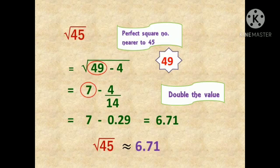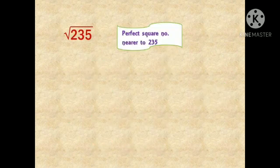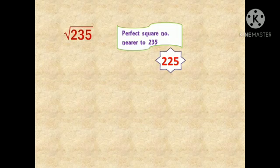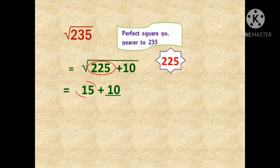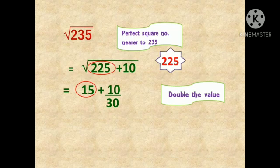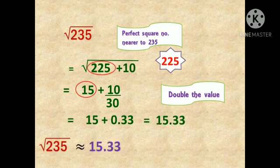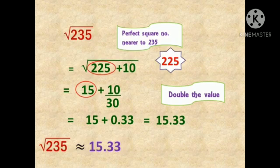Let us solve another problem to get a clearer idea. We will find the square root of 235. The first step: the perfect square number nearest to 235 is 225, because 15 squared equals 225. Rewrite the square root of 235 as the square root of 225 plus 10. The square root of 225 is 15, so we write 15 plus 10 divided by double of 15, which is 30. That gives 15 plus 10/30 = 15 plus 1/3 = 15 plus 0.33 = 15.33. So far we have found square roots for 2- and 3-digit non-perfect square numbers.